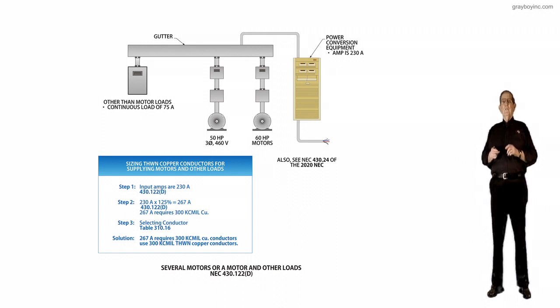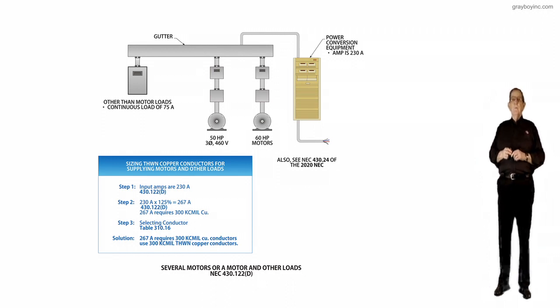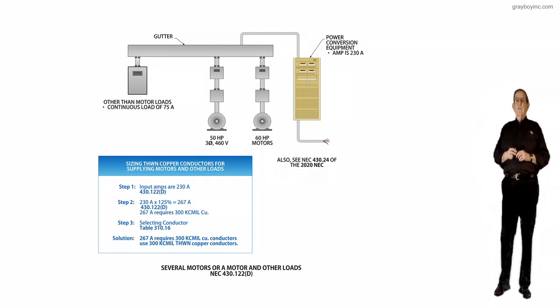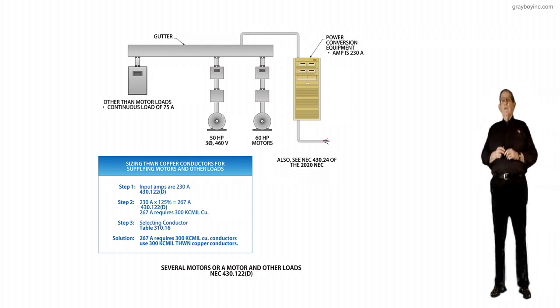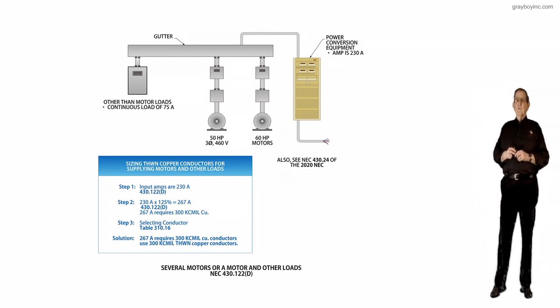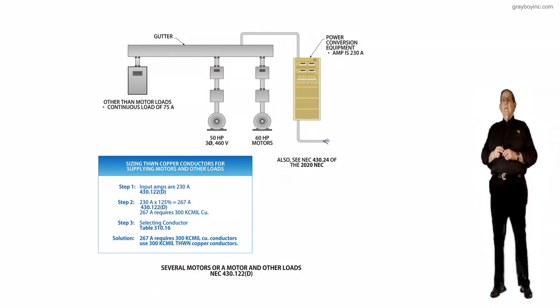So what they're telling you, you would use the drive here. Then the drive would have to be capable of supplying the continuous load at 125%, and then your motor loads there, the largest motor at 125%, which would be 60 horsepower, and then plus your 100% of your 50 horsepower motor.